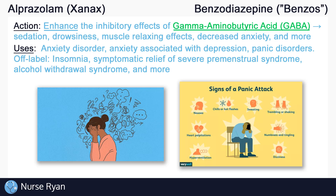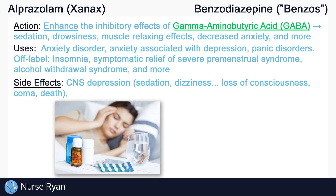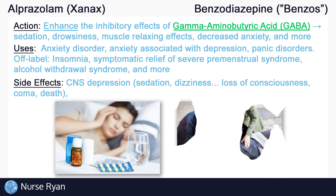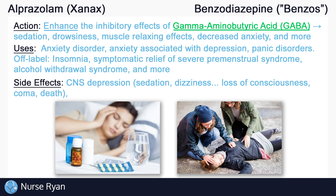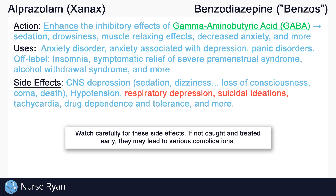Many of alprazolam's side effects relate to how benzos work, which is essentially as a CNS depressant. CNS depression may present as sedation, dizziness, weakness, unsteadiness, and more. Severe CNS depression can eventually lead to loss of consciousness, coma, and death. There are many other possible side effects, just some of which include hypotension — possibly due to decreased anxiety — respiratory depression due to CNS depression, suicidal ideations, which are very important to watch for, tachycardia, drug dependence and tolerance, and many more.